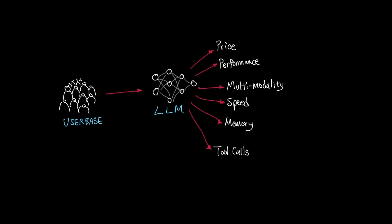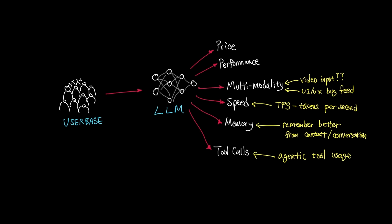So the delineating features for GPT-5 could be from adjacent features like multimodality with video input, which would be amazing to share video recordings of UI-UX bugs, or token output speed, which is typically measured in tokens per second, memory, which is the ability to remember past conversations and context, and higher reliance on tool calls, especially as agentic usage of these models are becoming more and more common.